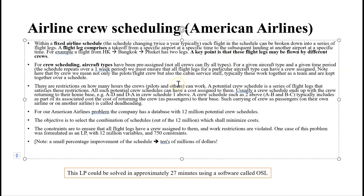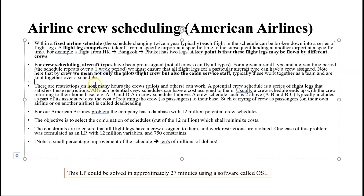For a given aircraft type and a given time period, the schedule is going to repeat over a one-week period. We have to ensure that all the flight legs for a particular aircraft have a crew assigned. And by crew, we mean not only the pilots but also the cabin and service staff. So the crew just got complicated — it's not just the people in the front, but those serving and caring for the passengers.